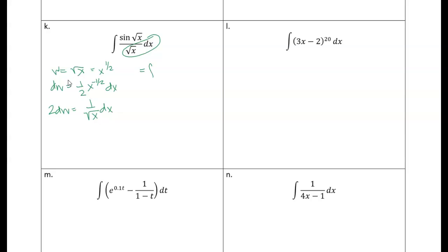So let's do that. We get the integral of sine of w times two dw. We bring the two out front, and the integral of sine is minus cosine, so we're going to get minus two cosine of w plus c.